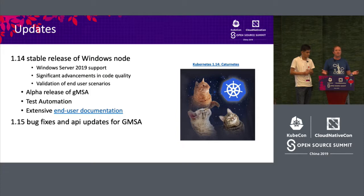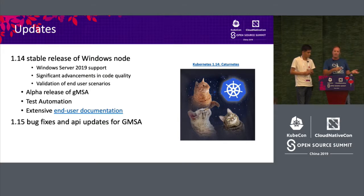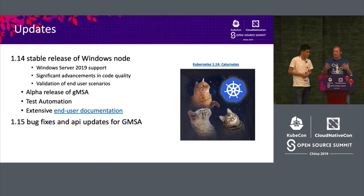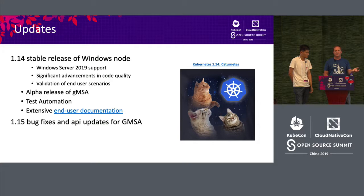In 1.15, we did bug fixes and there was an alpha release of Group Managed Service Account (GMSA) support in Kubernetes, primarily contributed by Docker and supported through integrations in Docker Shim. That has continued to evolve and is moving towards a beta label. This allows pods to authenticate to Active Directory so your host doesn't have to be domain-joined in order to have authenticated services running.